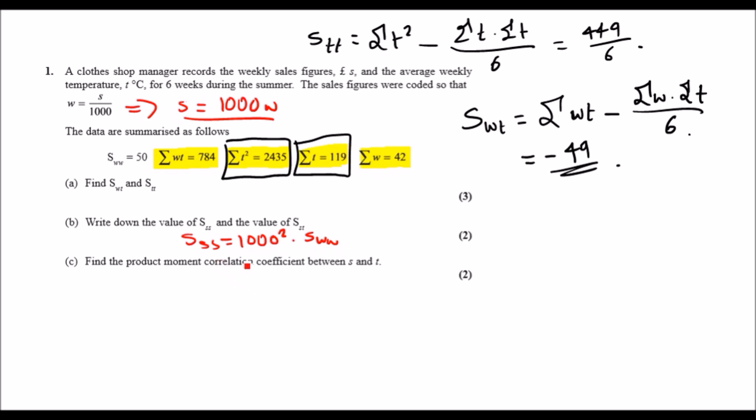So we can say instantly that means SS would be 1000 squared times SWW, so more or less fits the pattern. And doing that, let's see, you should get 1000 squared times 50 and you should get 50 million.